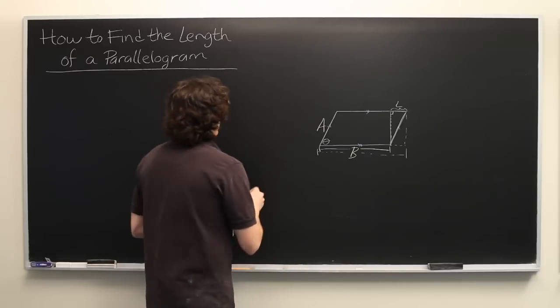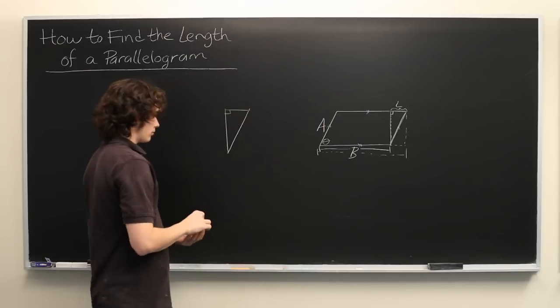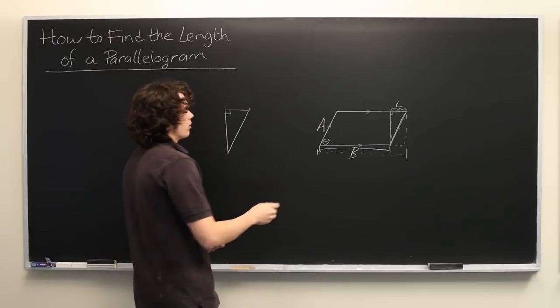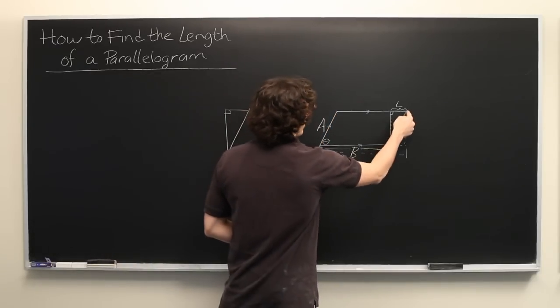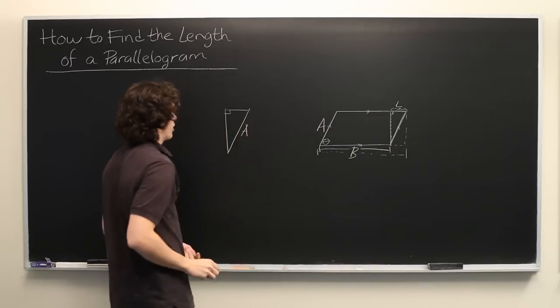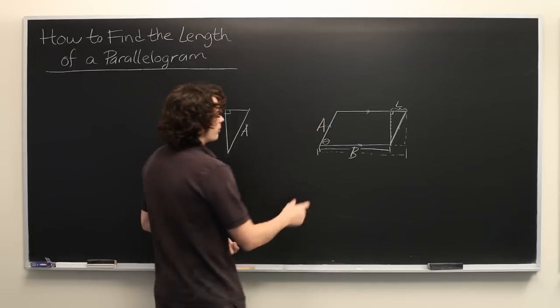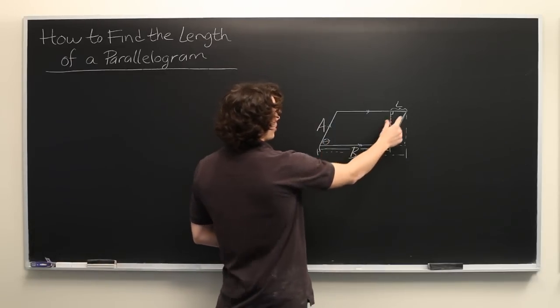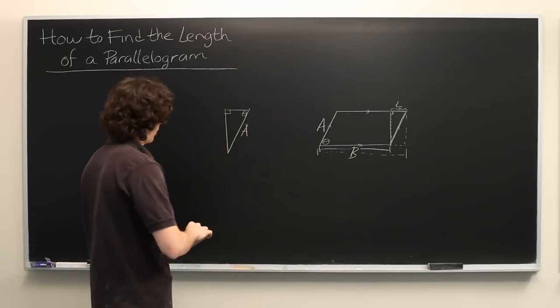So here we have our right triangle. Since this is a parallelogram, we know that this side and this side are of the same length. So the hypotenuse of our triangle is of length a. And we also know that this interior angle will be the same as this interior angle, theta. And we're trying to find l.